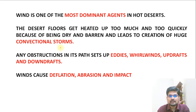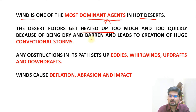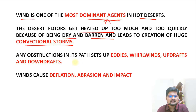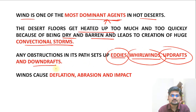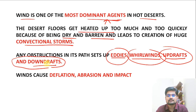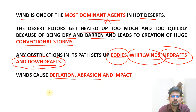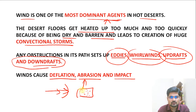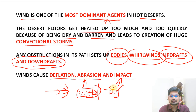Wind is the dominant erosional and depositional agent in deserts. The desert floor heats up quickly because of dry barren lands, creating convectional storms and high wind speeds. Different kinds of winds include eddies, whirlwind, updraft, and downdraft. The results of these aeolian processes are deflation, abrasion, and impact. Deflation hollows are created by deflation; abrasion occurs when wind carries small particles that attack surfaces; impact results from wind pressure.